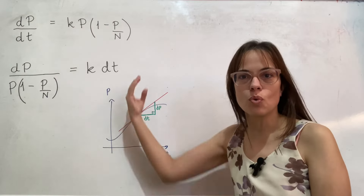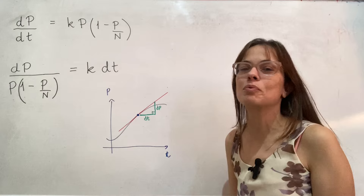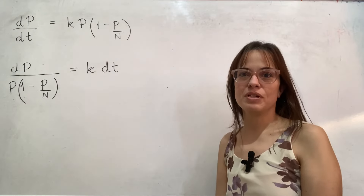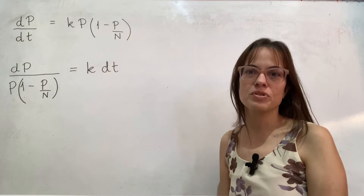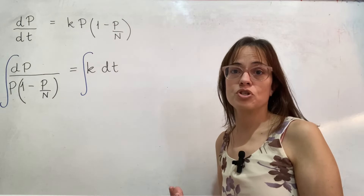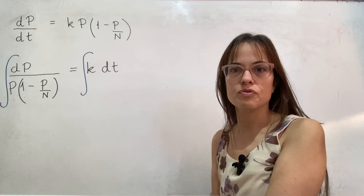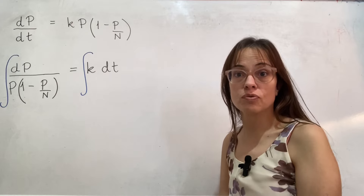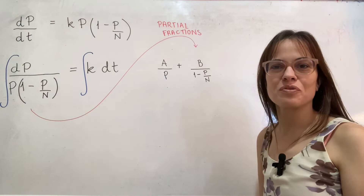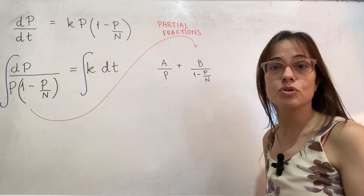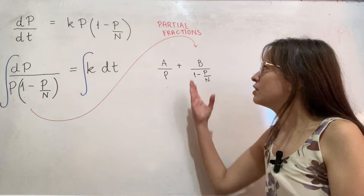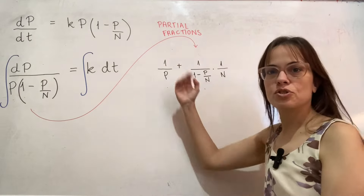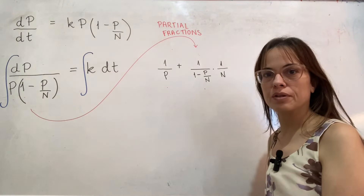When you think back on the meaning of derivative, dp/dt is the slope of the tangent line, and slope is rise over run. So dp is the rise and dt is the run, because p is vertical and t is horizontal. The notation makes a little bit of sense and is very convenient because you can just say you're going to integrate both sides.